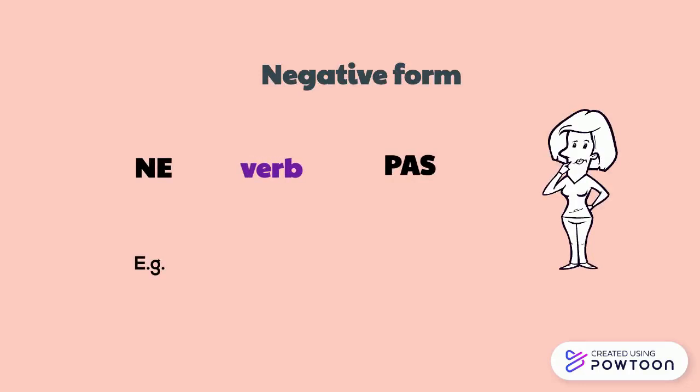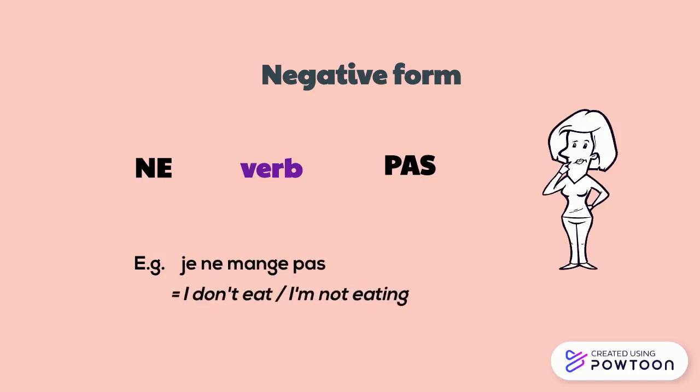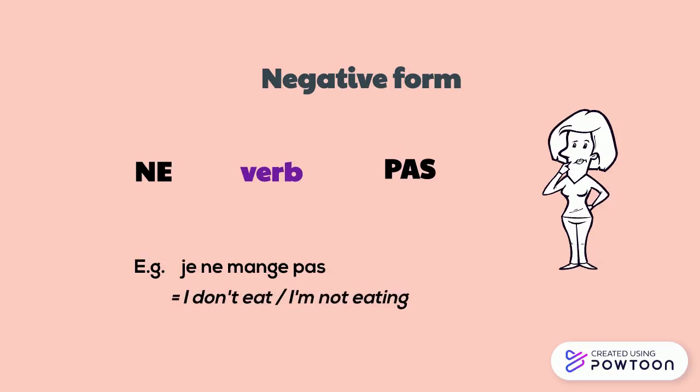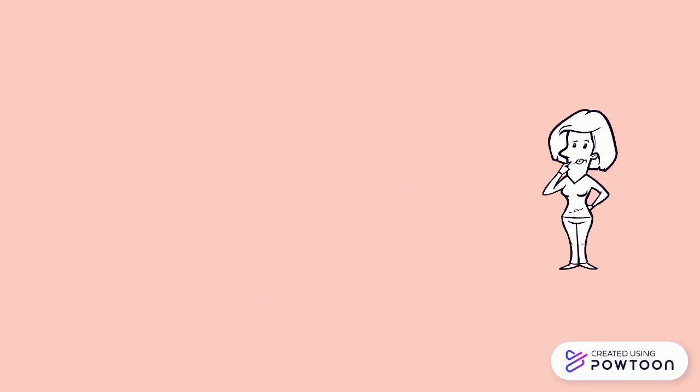The negative form uses 'ne...pas' and the verb is inserted between 'ne' and 'pas'. For instance, 'je ne mange pas' — I don't eat / I am not eating. Bonne chance!